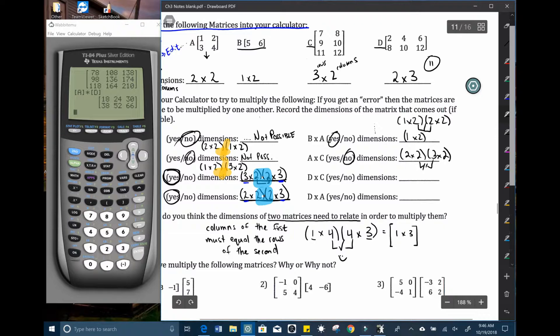D times C. So D times C, two by three times a three by two. Hey, that one will work out and we'll be left with a two by two.